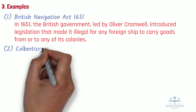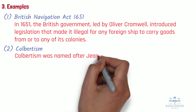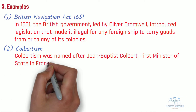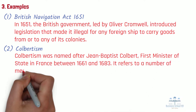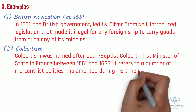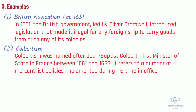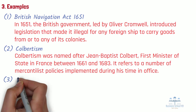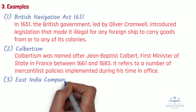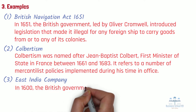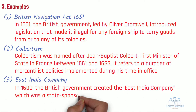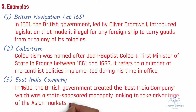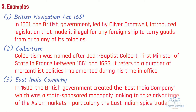Number 2: Colbertism. Colbertism was named after Jean-Baptiste Colbert, first minister of state in France between 1661 and 1683. It refers to the number of mercantilist policies implemented during his time in office. He introduced tariffs, encouraged public works programs, and set up the France Merchant Navy in the bid to expand exports abroad. Number 3: East India Company. In 1600, the British government created the East India Company, which was a state-sponsored monopoly looking to take advantage of the Asian markets, particularly the East Indian spice trade. It not only brought gold back to Britain, but also helped establish a strong and permanent trade route between Britain and her colonies.